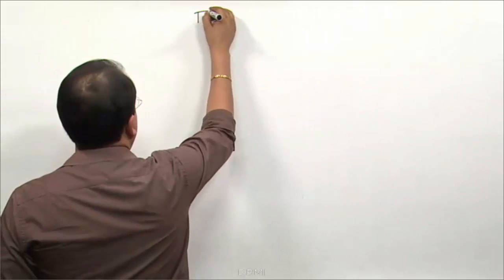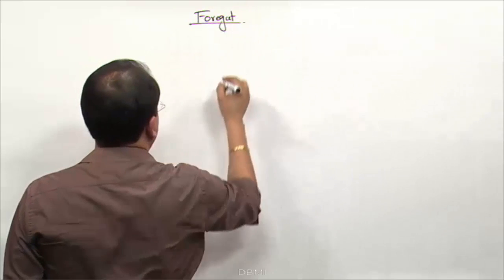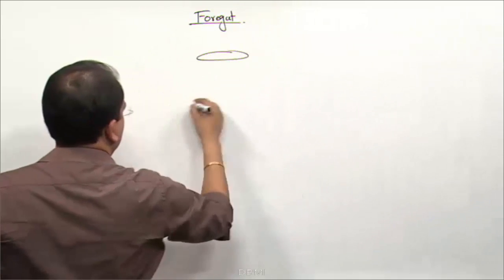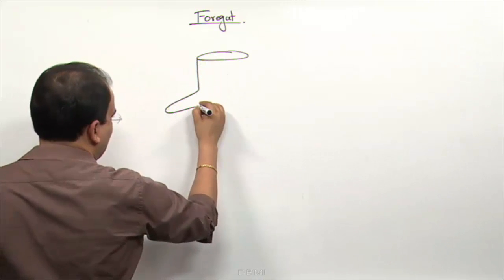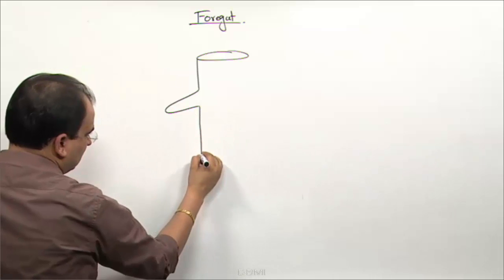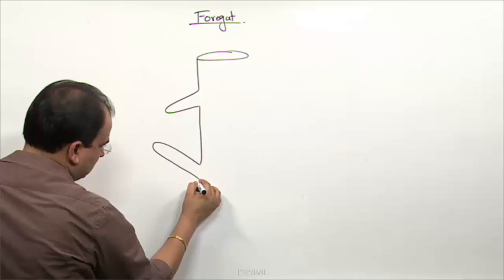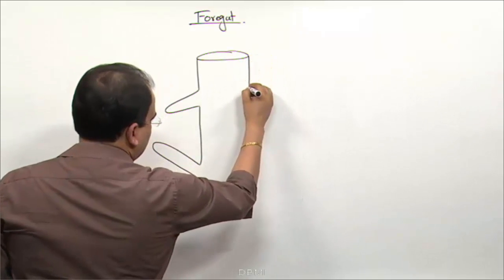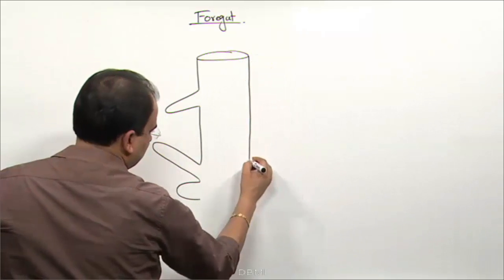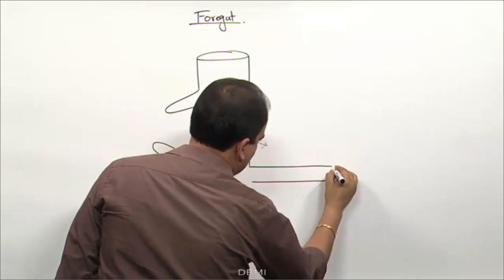Let us begin our discussion with the foregut. The foregut tube will give certain extensions like the respiratory bud, hepatic bud, ventral pancreatic bud, and dorsal pancreatic bud.